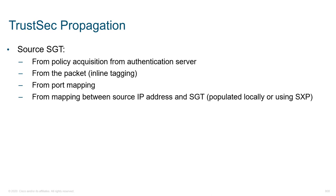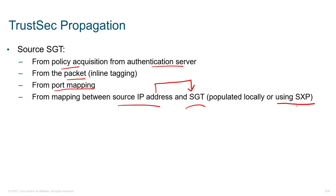As for the propagation of security group tags, it can happen a couple of different ways. First, from policy acquisition from the authentication servers — when someone authenticates at a switch port, ISE can return a policy to that switch or wireless LAN controller specifying the security group tag for that user. We can also have a frame arrive with a tag already on it, passed over from an adjacent switch. Additionally, we can specify a group tag based on the physical port itself, or map a source IP address to a security group tag — this is typically propagated using SXP, the security group tag exchange protocol.